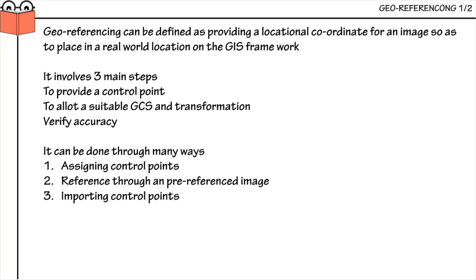The third step is to verify the accuracy. After your map is referenced to a real-world location, it is very important to verify its accuracy. Georeferencing can be done through many ways: assigning control points to a particular pixel of your raster image, referencing based on an already-georeferenced image, or importing location coordinates from a CSV file. In this video we will look at assigning control points.